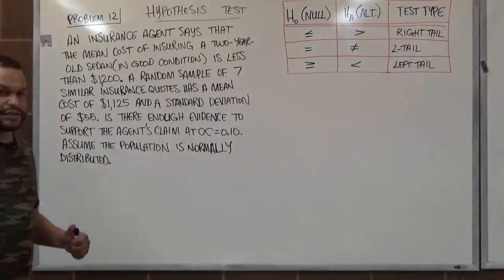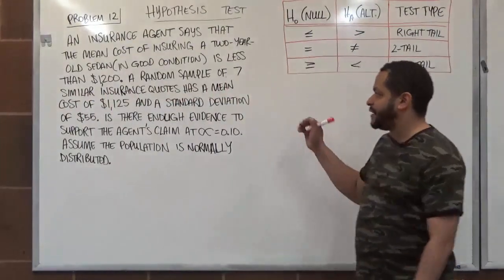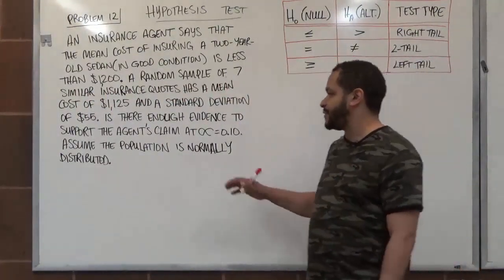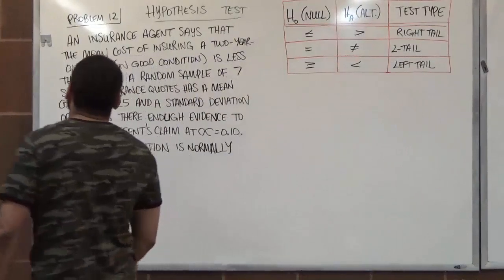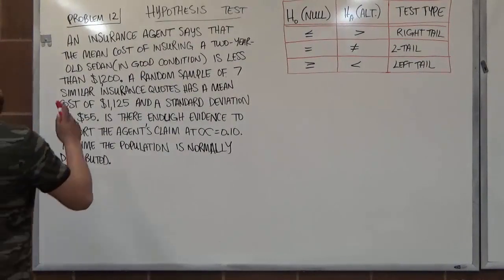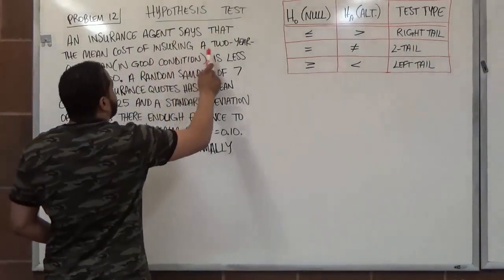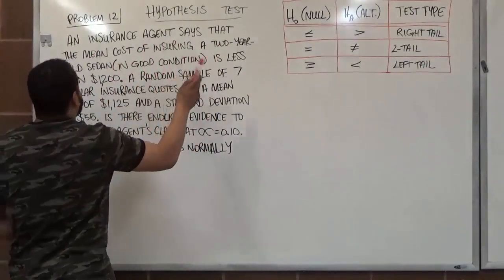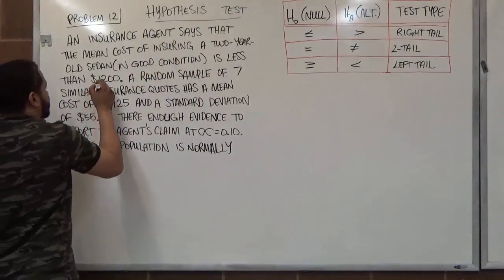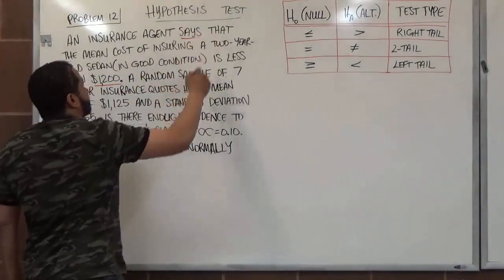It's important to note that the population is normally distributed, which allows us to continue with this problem. We look at the first sentence and see that the insurance agent says the mean cost of insuring a 2-year-old sedan is less than $1,200.